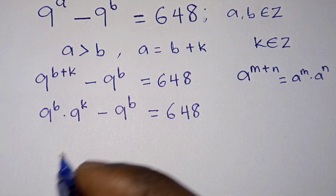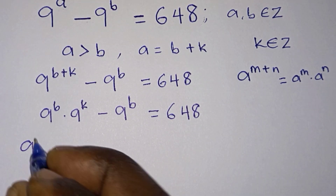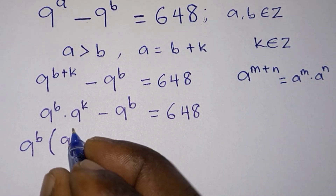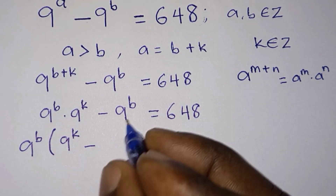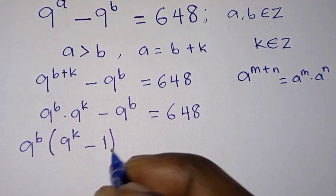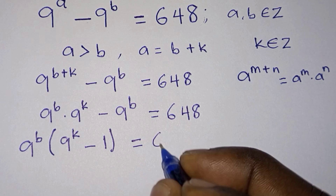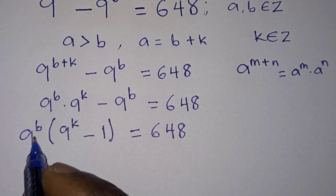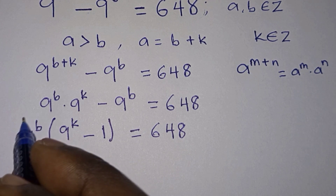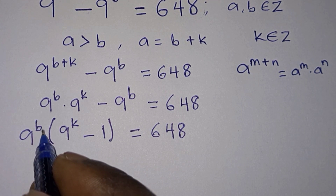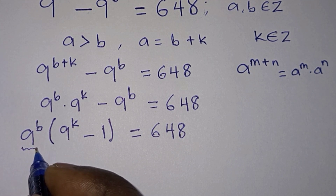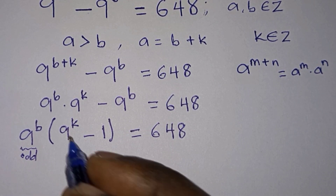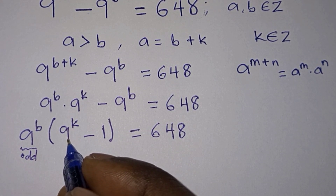9 to the power b is common, so we can factor it out. We get 9 to the power b times (9 to the power k minus 1), equal to 648. Now, since b is an integer, 9 to the power b is always an odd number, and 9 to the power k is also odd.